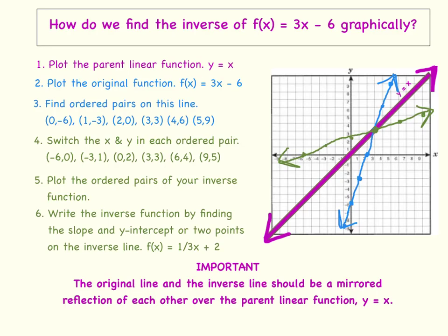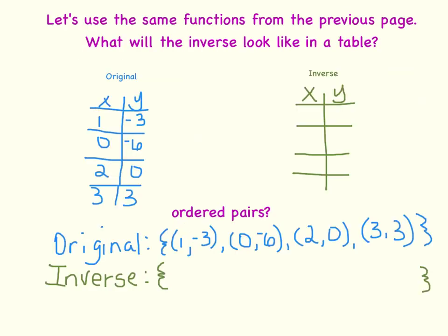Now let's look and see what the inverse function looks like in a table. We will use the same functions as we did in the graphing example. So what will the inverse look like in a table? Well, let's first look at the original. The original, remember these are our ordered pairs that I have just now divided and put all of the x coordinates under the x column and all of the y coordinates under the y column. So to express the inverse in a table, I would just again switch the x with the y.